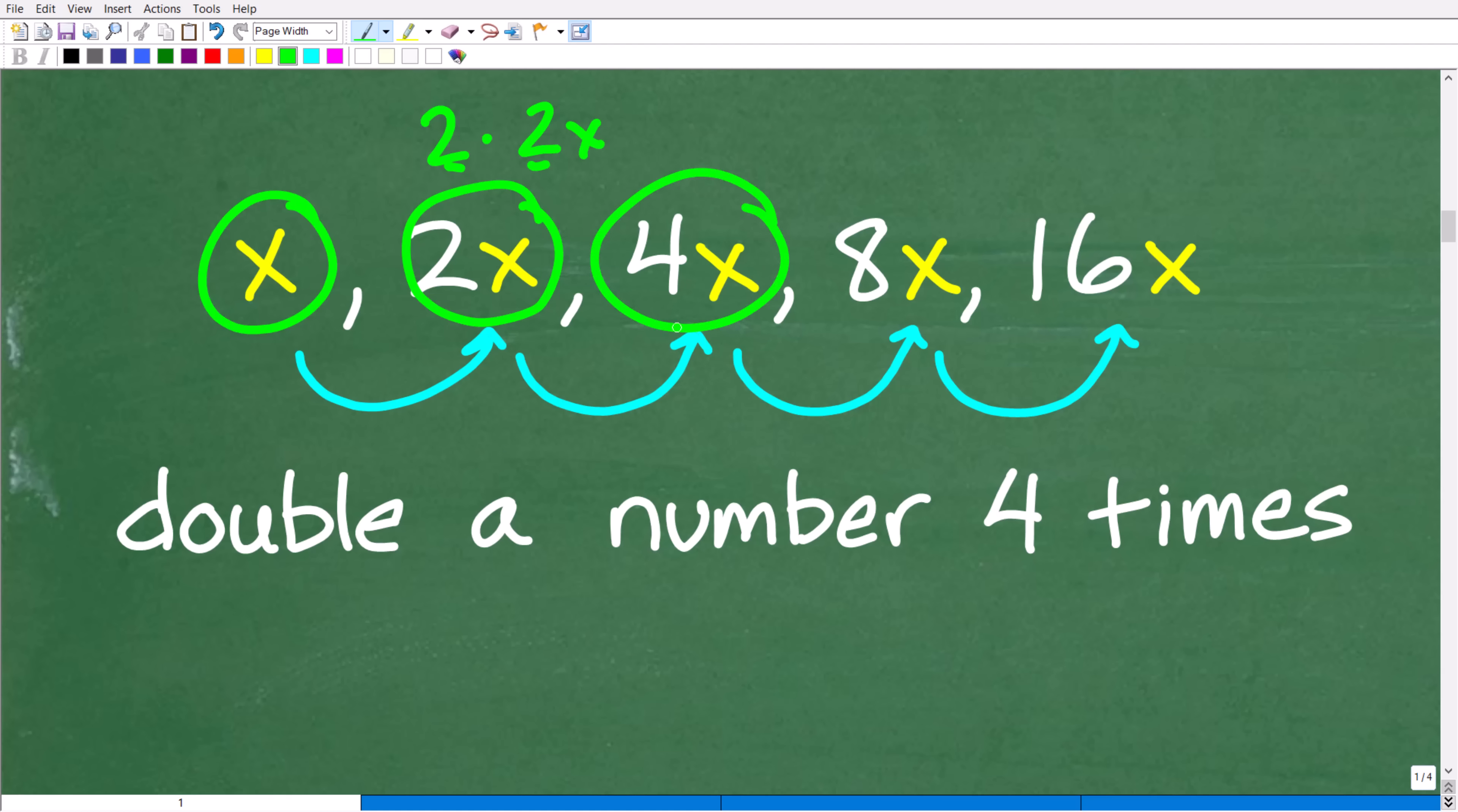So, we're going to continue to double here. We're going to double this thing four times. This was our first time, this was our second time. So, let's double again. So, 4x times 2 is 8x. That's our third double.